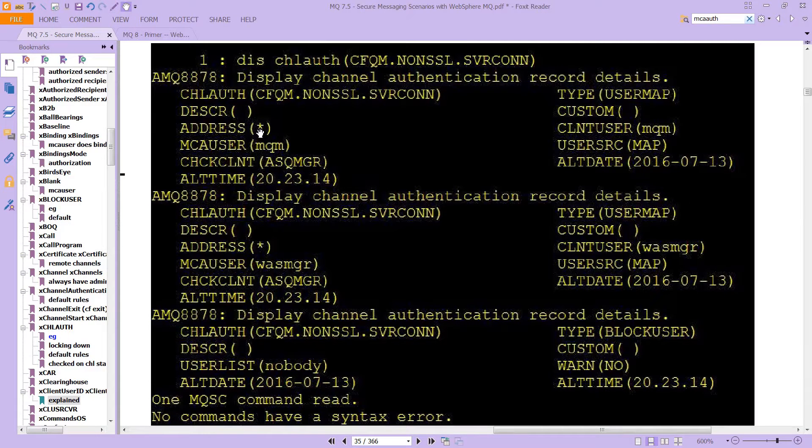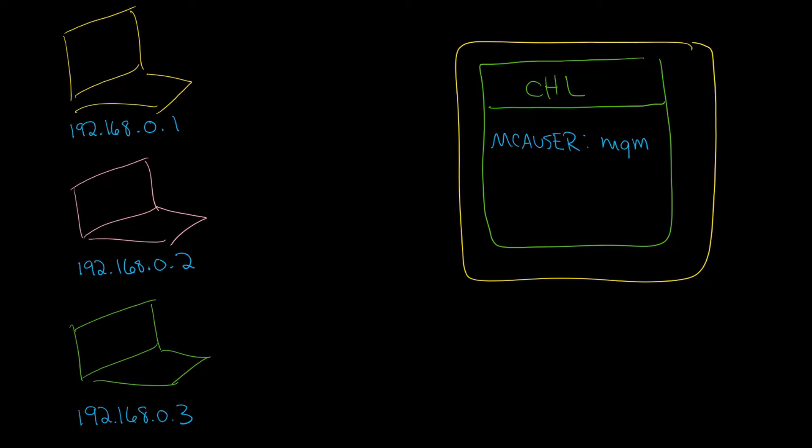Instead of address with a star, you have 192.168.0.1, and instead of your mqm for the client user, you're saying bill. And then you have these other properties involved, and if your network looks like this.